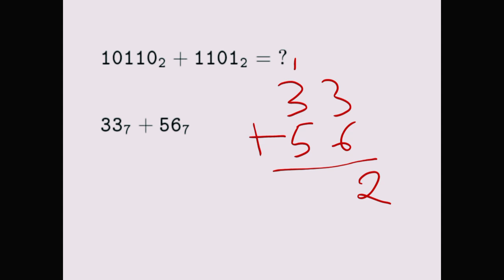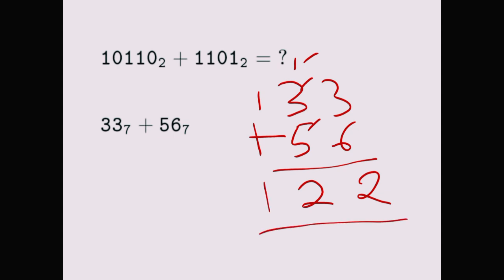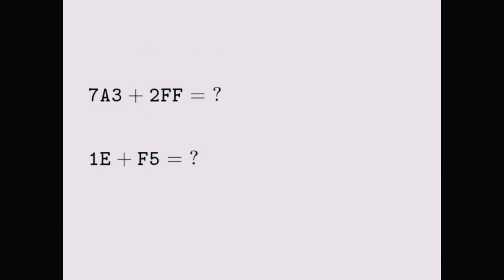We have one plus three which is four, plus five which is nine. We can't write nine. So nine divided by seven is one remainder two, so we write the remainder two here, then carry over the one which ends up at the front.